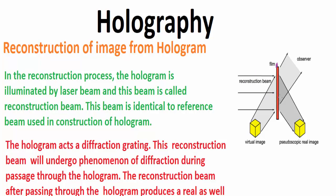The hologram acts as a diffraction grating and produces two sets of diffracted waves. The diffracted waves carrying the same phase and amplitude as the object interfere and reconstruct a full three-dimensional virtual image of the object behind the hologram. The other diffracted waves form the real image.